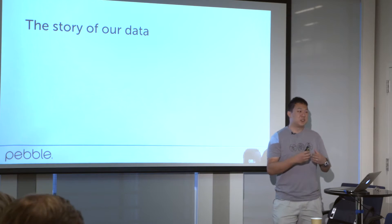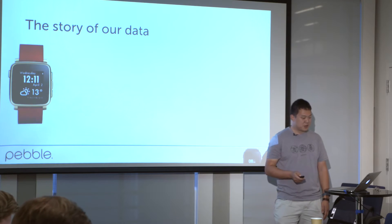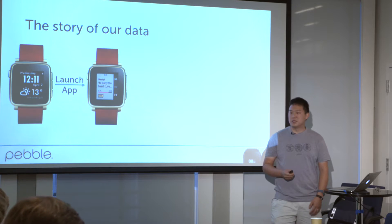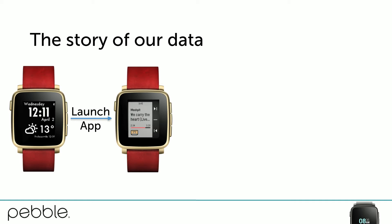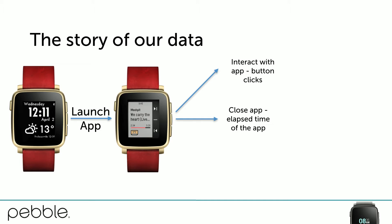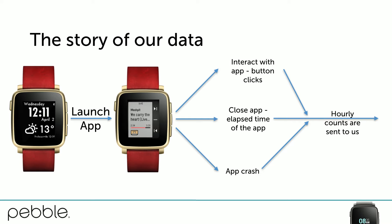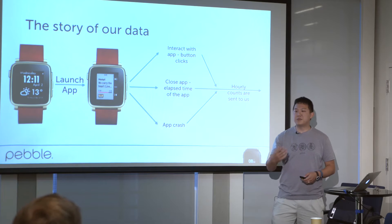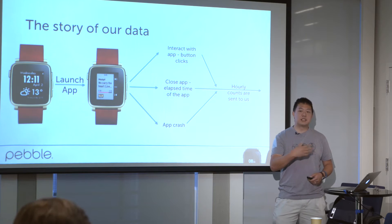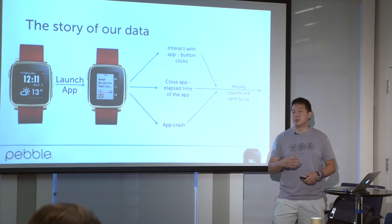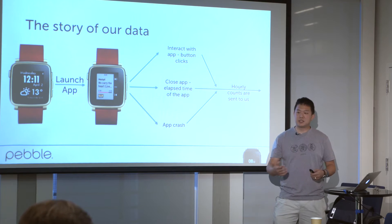Before I get to it, I want to tell a little story of how the data comes to be. We start with any watch face, launch an app — say the music app — and a variety of things can happen. A user can interact with the app, leading to button clicks. They can close an app, which gives us an elapsed time. Or the app can crash, and we track crash counts. We roll this up on an hourly basis, so we get hourly rollups — for example, a user pressed a button 10 times over two app launches in an hour, with no breakdown of how that's split across launches.